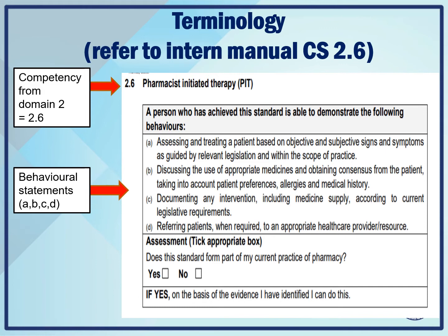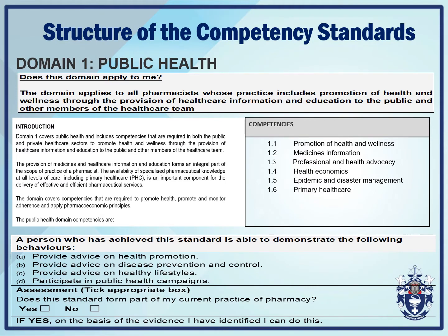The structure of the competency standards: we have a domain — public health for domain one — and the question 'does this domain apply to me?' The domain applies to all pharmacists whose practice includes promotion of health and wellness through the provision of healthcare information and education to the public and other members of the healthcare team. There is an introduction giving a brief overview of what the domain is about, and it also gives capabilities and outcomes in your manual. Read through that — it gives better insight as to what is required for each of the domains.